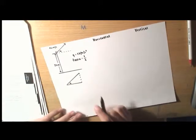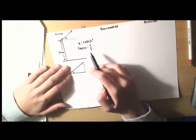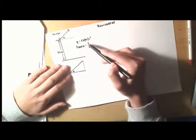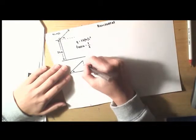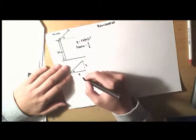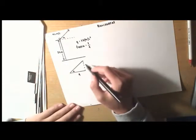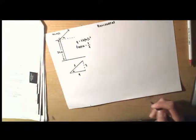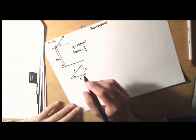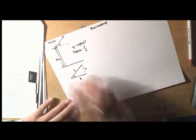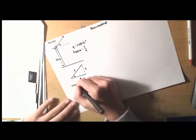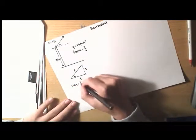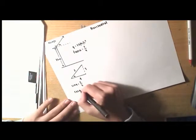What you always want to do first is find the angle. We're given that tan alpha equals 3 on 4. If we draw the triangle, we know that tan is opposite on adjacent, so the opposite is 3 and the adjacent is 4. Using Pythagoras: 3 squared plus 4 squared, square-rooted, gives 5 as the hypotenuse. So sin alpha equals 3 on 5 (opposite on hypotenuse) and cos alpha equals 4 on 5 (adjacent on hypotenuse).